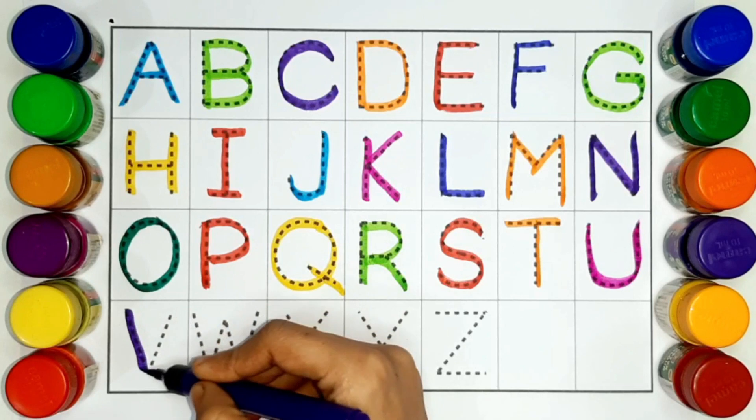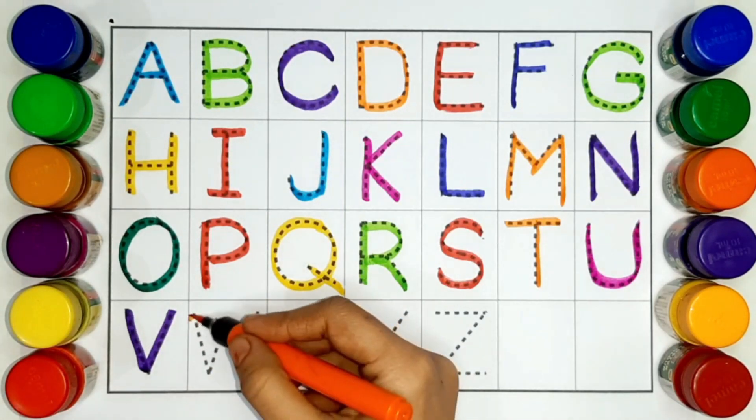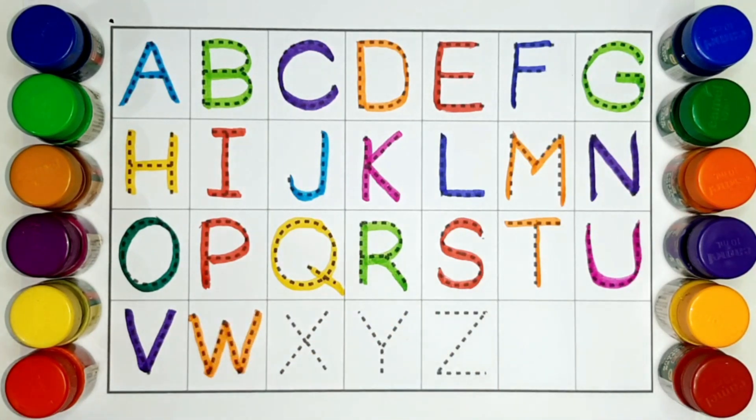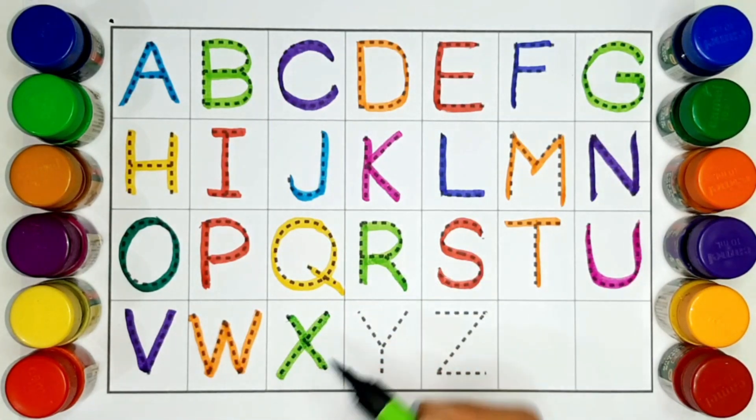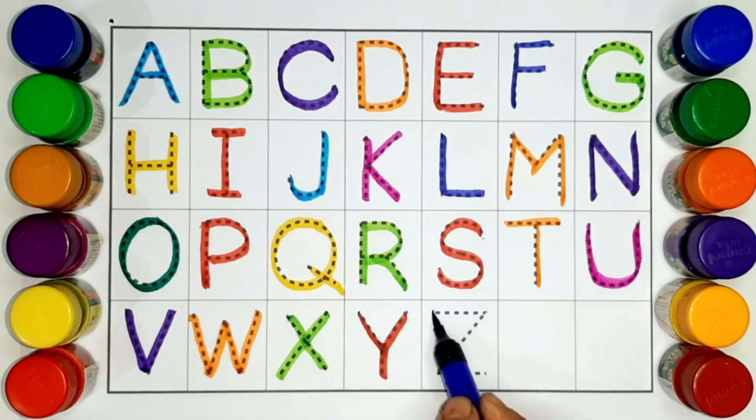Purple color. V. Orange color. W, W for watch. Parrot green color. X, X for xylophone. Red color. Y for yak. Blue color. Z, Z for zebra.